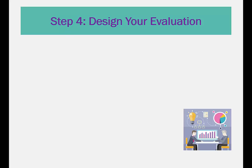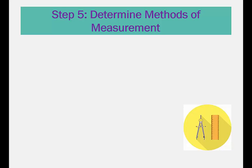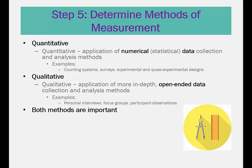Step 4: Design your evaluation. Reflecting back on the knowledge you have gained thus far in the module, select the type of evaluation to be conducted and the method to be used. Step 5: Determine method measurement. There are two types of measurement you can use: quantitative and qualitative. Quantitative is the application of numerical data, typically obtained through counting systems, surveys, and experimental designs. Qualitative is the application of more in-depth, open-ended data, typically obtained through personal interviews, focus groups, and participant observations.